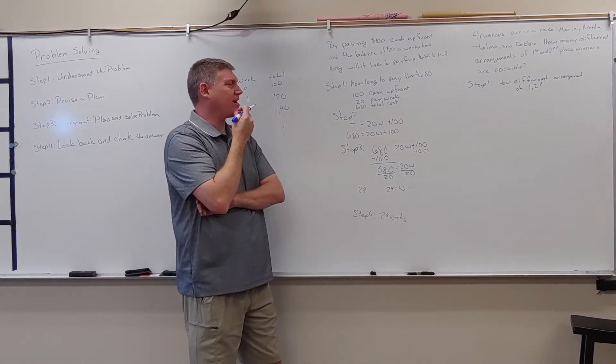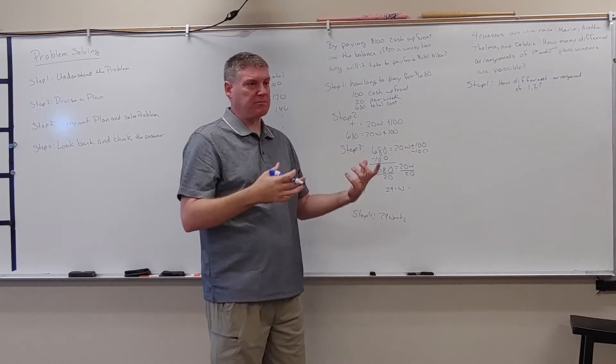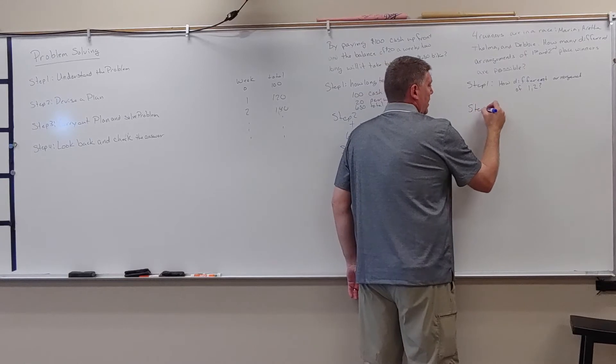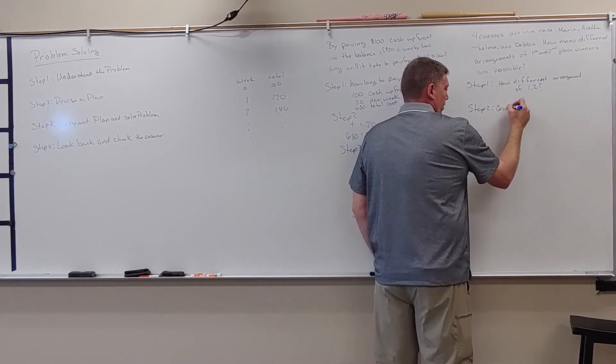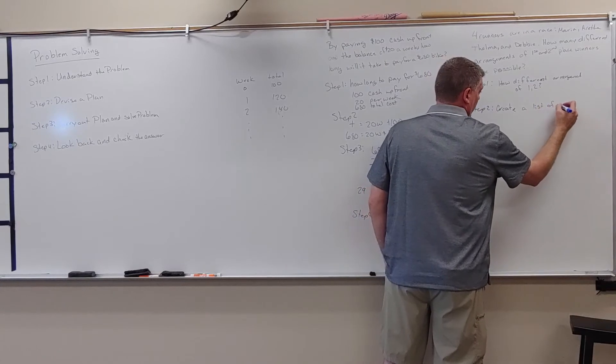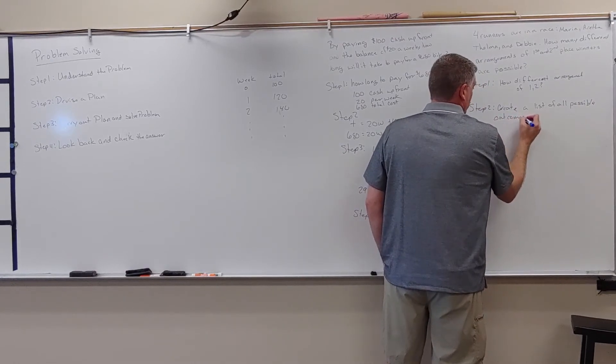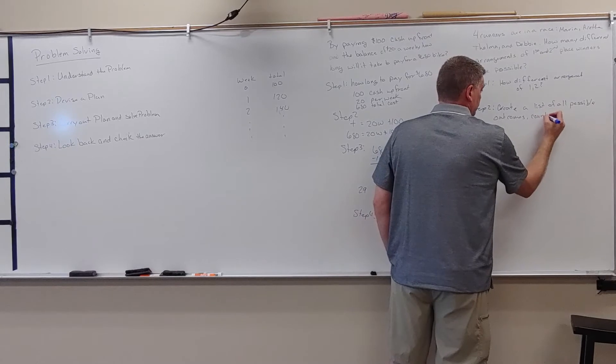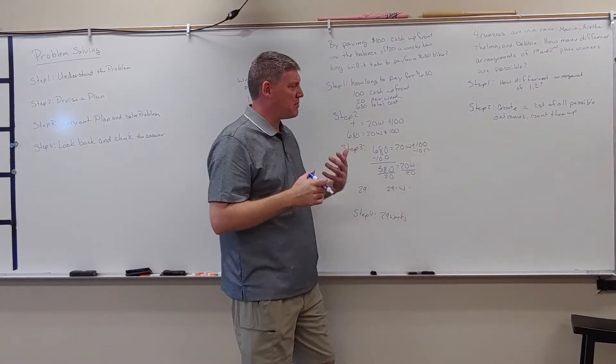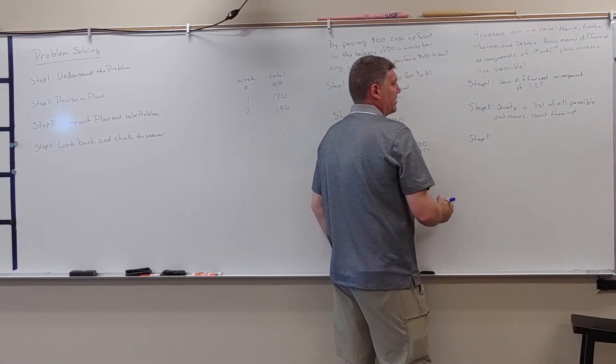So step two. I think what I'm going to do, I don't think I could, I might be able to come up with an equation. Maybe the easiest thing to do would be to list them out. There doesn't seem to be that many contestants. Maybe I create a list. So step two is, my plan is what I'm going to do is devise a plan. I'm going to create a list of all possible outcomes. And then I'll count them up. So that's pretty straightforward. Maybe it's not the most efficient method, but it's the one we're going to work with today. So we're going to go to step three. We're going to implement that.